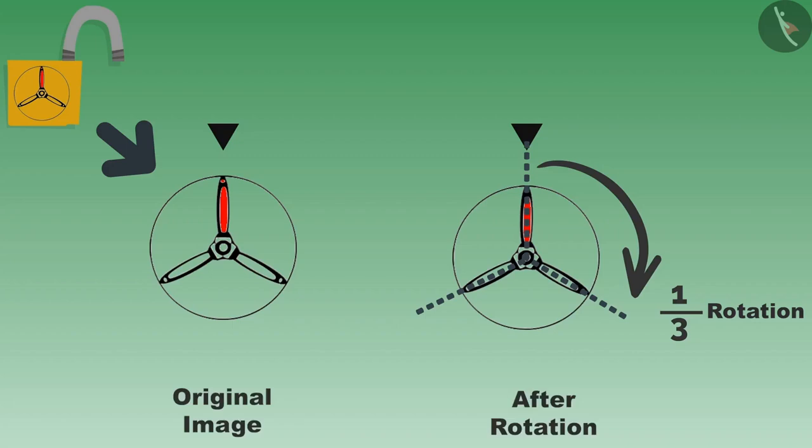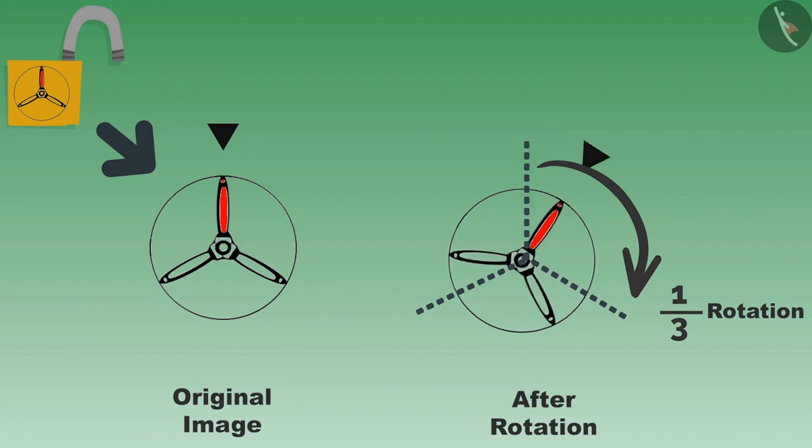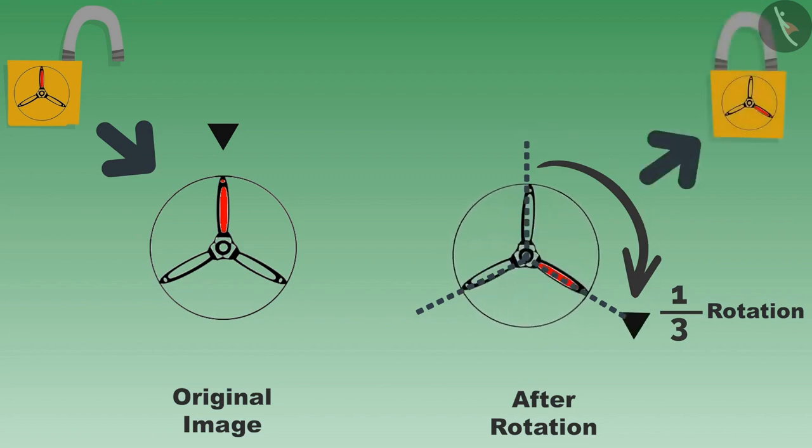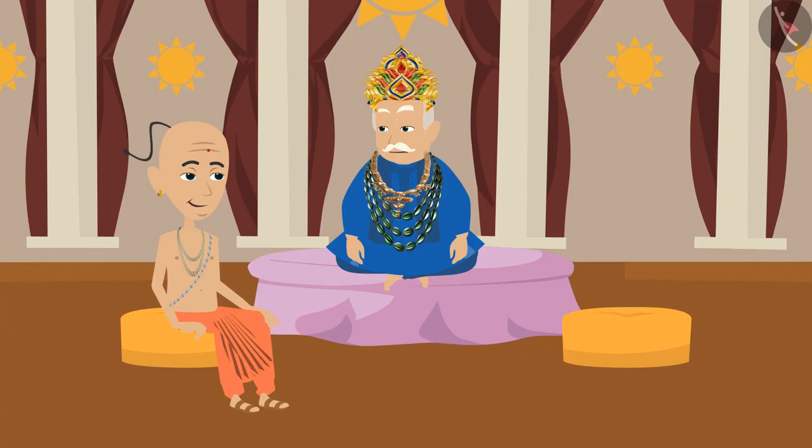I am going to show you by rotating this lock. Now it is open. And after rotating in this manner, it is closed. Yes, Tenali Rama, now I can see that it has rotated once. I understood your trick.